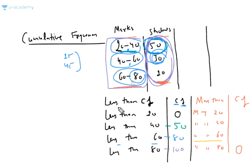The cumulative frequency more than something. For example, less than 20, less than 40. Less than 20 is 0, less than 40 is 50.